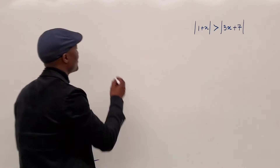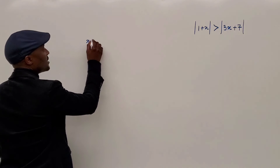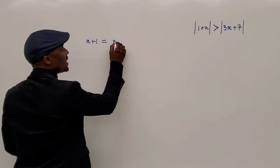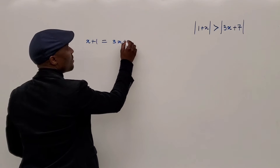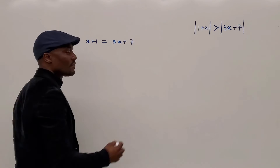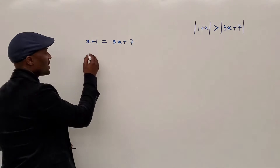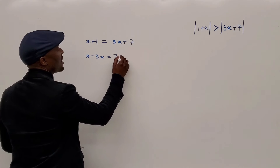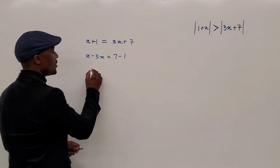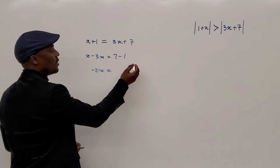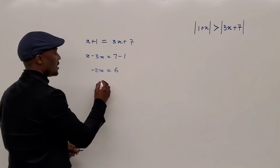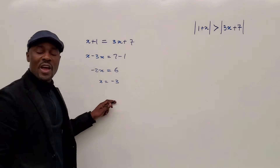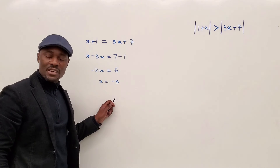We have x plus 1 equal to 3x plus 7. If you solve this equation, you end up with x minus 3x equals 7 minus 1. You have negative 2x equals 6, and x will be negative 3. So now you have x equals negative 3 — that's the first critical point of decision.